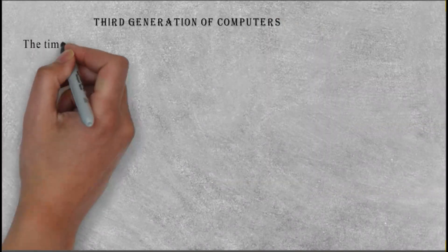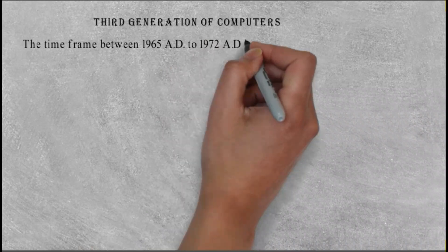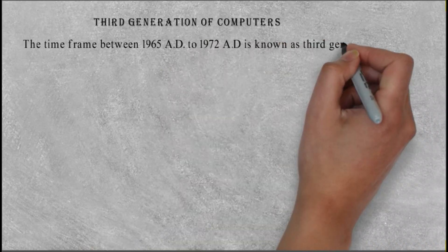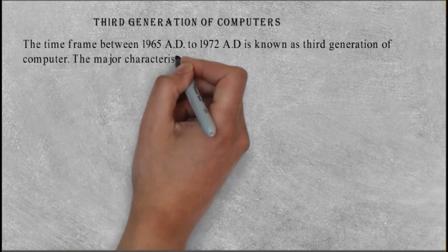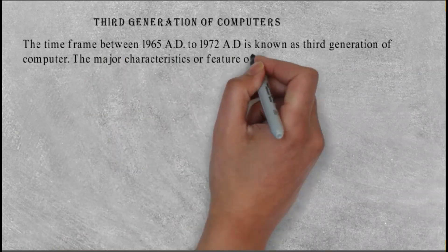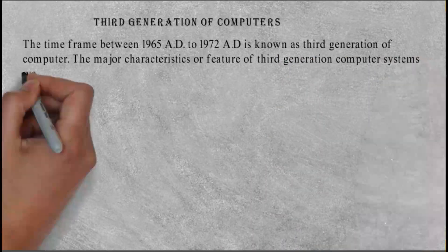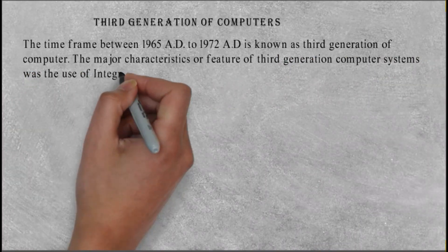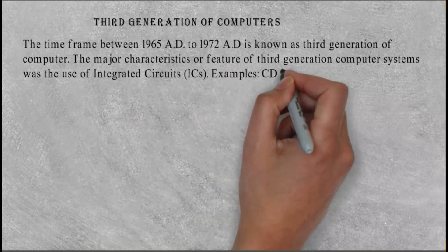Third generation of computers: The time frame between 1965 AD to 1972 AD is known as third generation of computer. The major characteristics or feature of third generation computer systems was the use of integrated circuits (ICs). Examples: CDC 1700, IBM 360 series, etc.